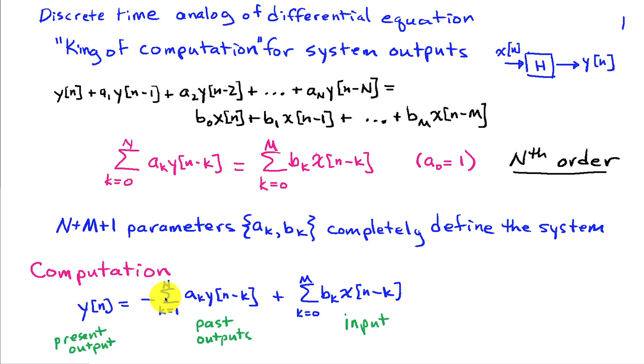As for computation, we can rearrange the difference equation to put the present output on the left-hand side, and then the function of past outputs on the right-hand side, as well as the input. This gives us a way of computing the present value of the system output from past outputs and the present and past inputs. We've just taken these terms here and moved them to the other side of the equation, isolating y[n].